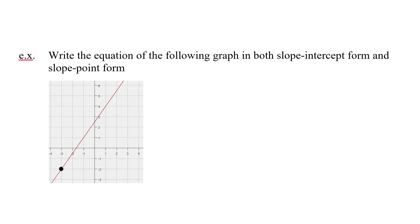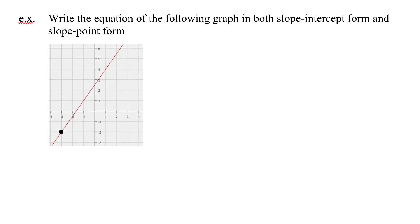Next example. Write the equation of the following graph in both slope-intercept form and slope-point form. So regardless of where I start, or which form I want to go to first, I need two things. I need a slope and I need a point. So I think the point's a little bit easier because we see the point right down here in our graph. What's the x-coordinate? Negative 3. What's the y-coordinate? Negative 2. Simple.